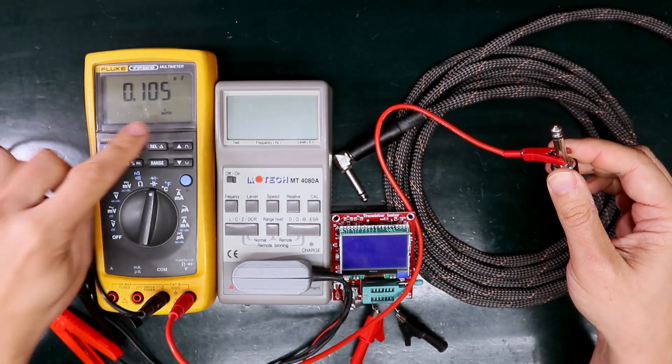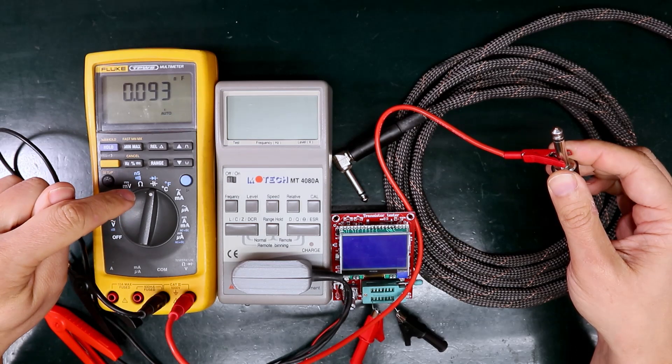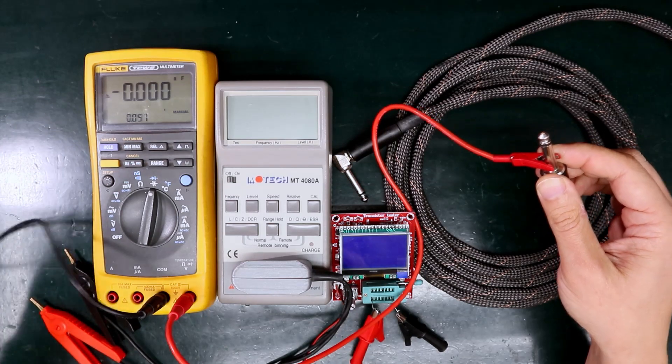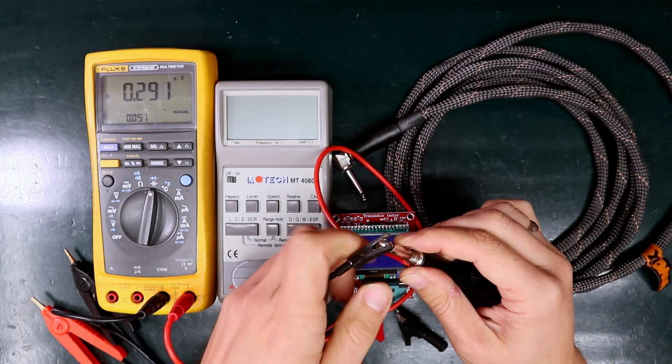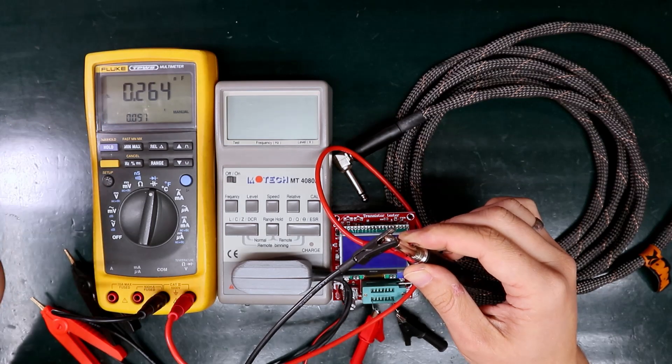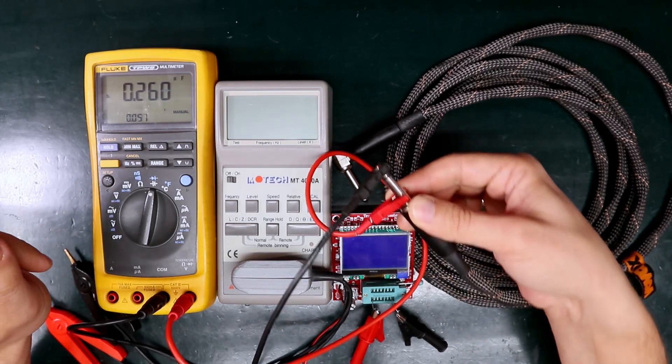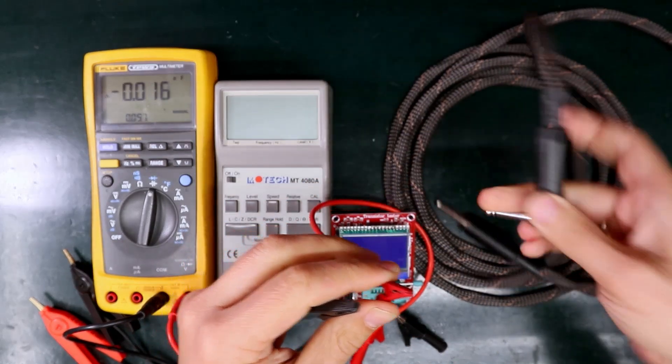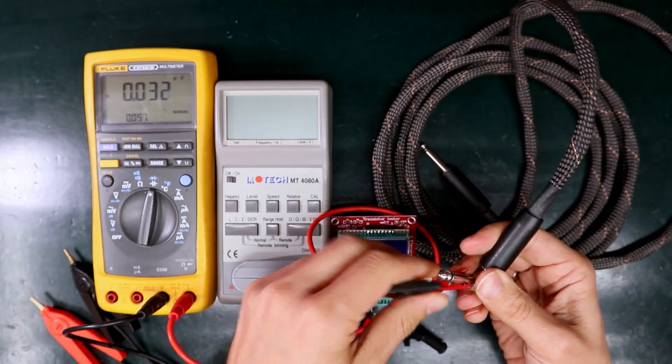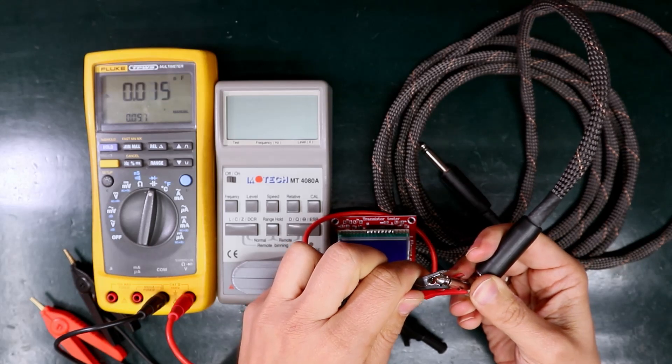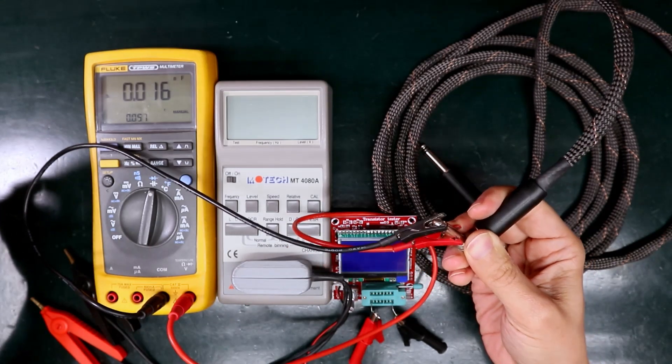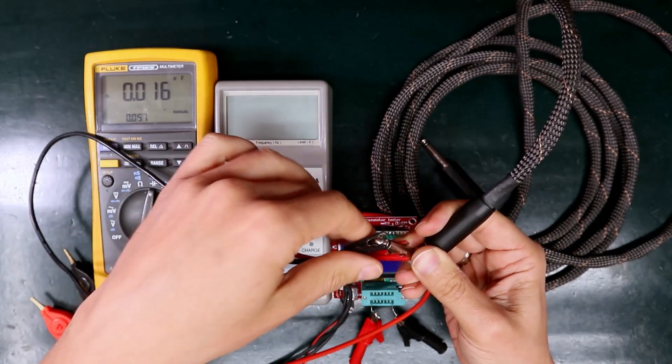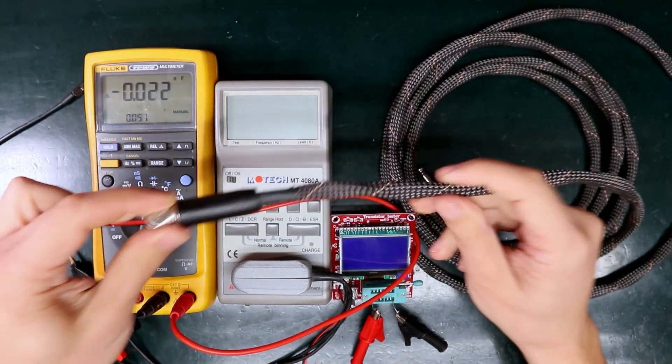Note that there is some parasitic capacitance here from this meter and I have to zero using the relative mode. Now this Fluke reads about 240 something pF from this end of the cable. Let's see the other end. It shows about 16 pF which again clearly indicates that the problem is somewhere in that area of the cable.